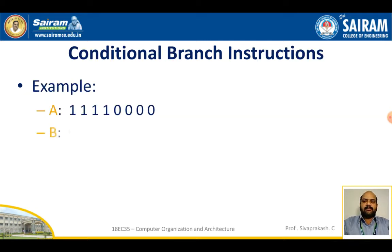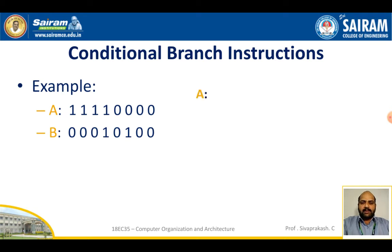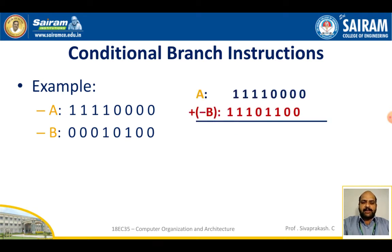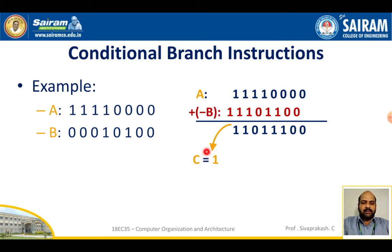Let's look at a small example. A = 11110000 and B = 00010100. When we add these two values, the result is 100000100, which produces a carry. So the carry flag C is set to 1.